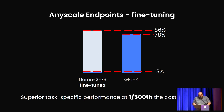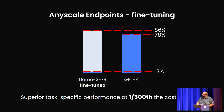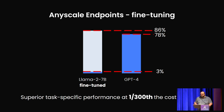But if you fine-tune Llama 2 7B — a model that, according to rumors, is about 1/150th to 1/200th the size of GPT-4 at 1.4 trillion parameters — it gets 86% accuracy. You do the math and it turns out that for this particular use case, it's about 300 times cheaper.